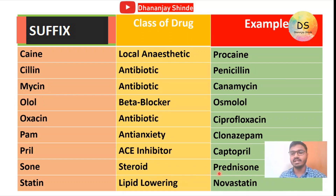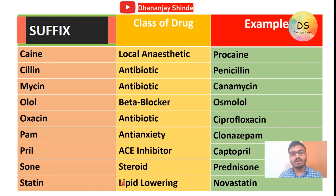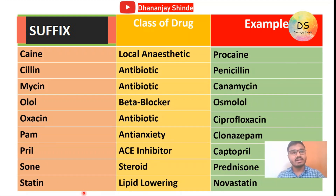Then '-sone' — if the suffix of a drug is '-sone', then the class of drug will be steroid, and the example is prednisone. And the last one is '-statin' — the class of drug for the '-statin' suffix is lipid lowering, and the example is lovastatin. So these are the suffixes I have mentioned in this table. You have to remember all these suffixes to identify the class of any drug. Thank you.